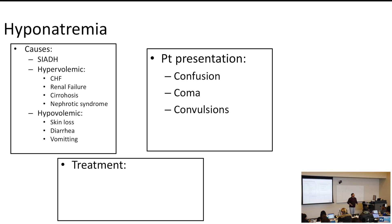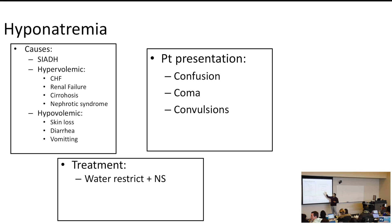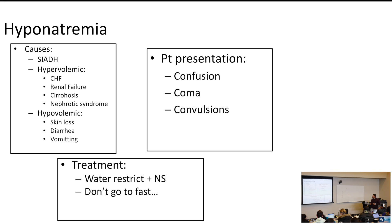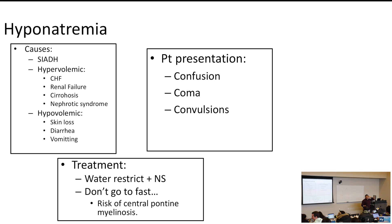The treatment for hyponatremia: you can do water restriction if the patient is hypervolemic, or give sodium if they're hyponatremic. Don't go too fast — if you go from low to high too quickly, you get central pontine myelinolysis. Remember the mnemonic: low to high, the pons will die; high to low, the brain will blow. Rapid correction of hyponatremia causes central pontine myelinolysis, and rapid correction of hypernatremia causes cerebral edema.